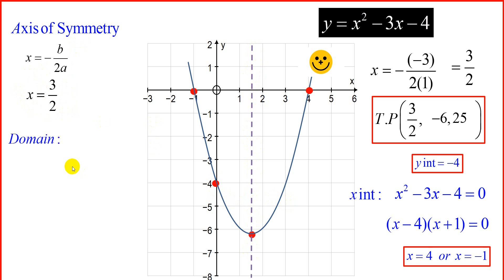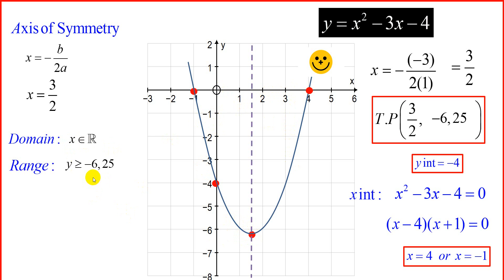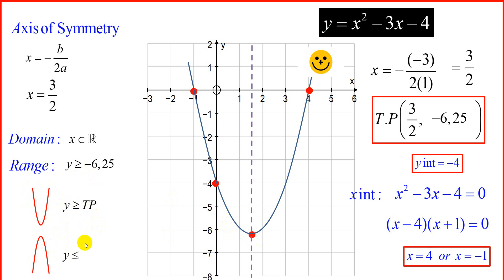For the domain of this graph, x is an element of the reals — for every x-value, we will get a point on the graph. For the range, the lowest point on the y-axis is the turning point y-value, which is -6.25. So the range is y ≥ -6.25. In general: a happy face gives y greater than or equal to the turning point y-value; a sad face gives y less than or equal to the turning point y-value.